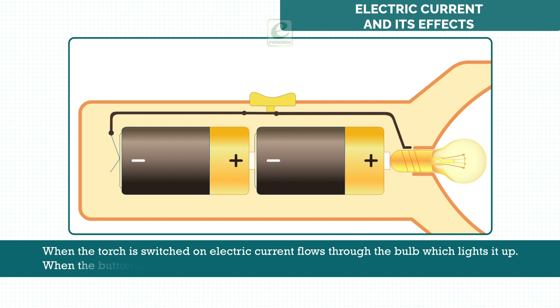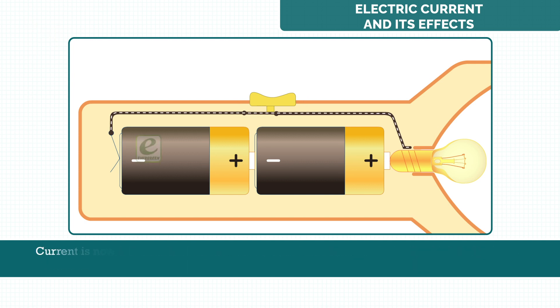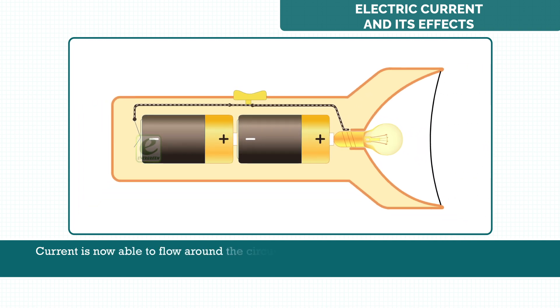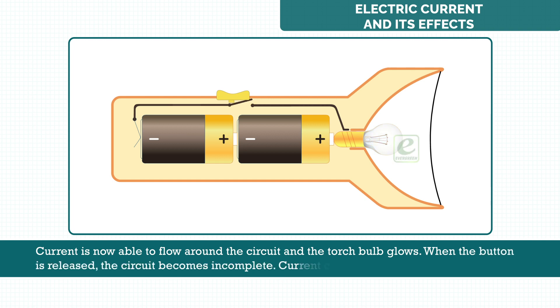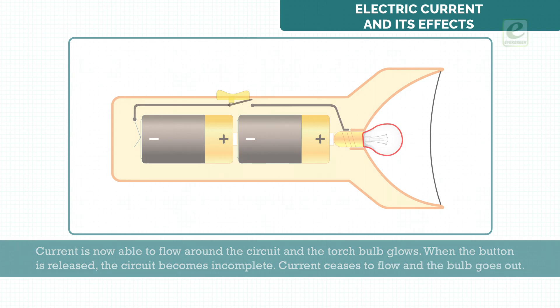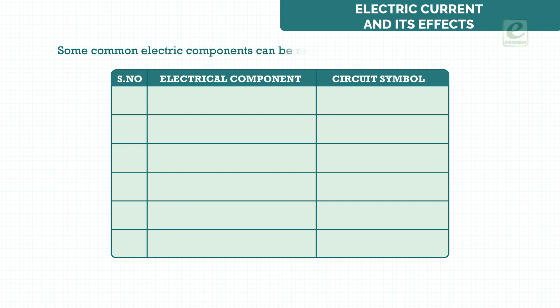When the button on the torch is pressed, the circuit is complete, that is, there are no gaps. Current is now able to flow around the circuit and the torch bulb glows. When the button is released, the circuit becomes incomplete. Current ceases to flow and the bulb goes out. Some common electric components can be represented by the following symbols.